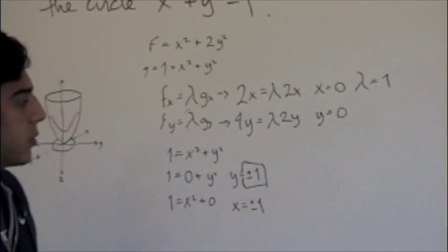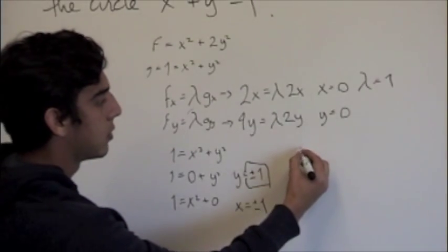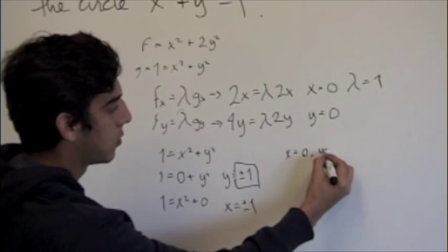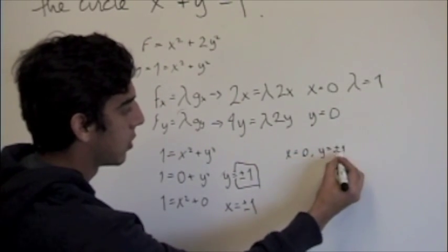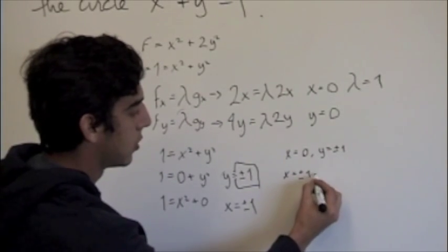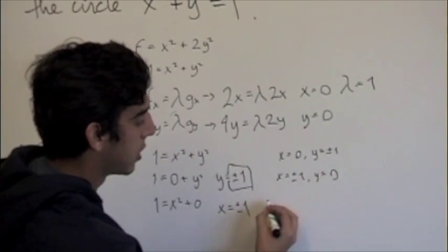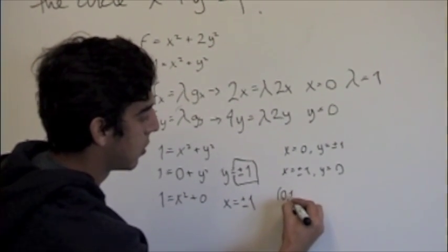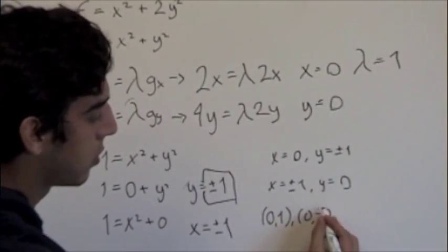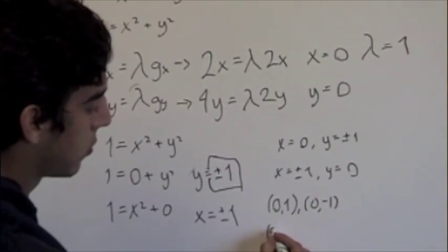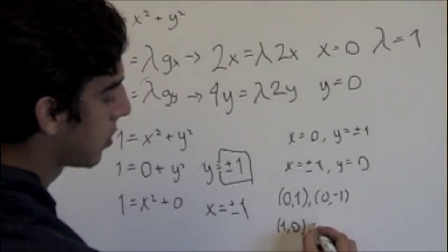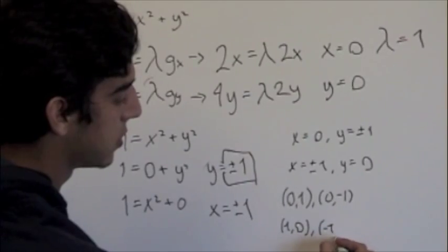For our critical points, we will have x = 0 and y = ±1, or x = ±1 and y = 0. So we're going to have the points (0,1), (0,-1), (1,0), and (-1,0).